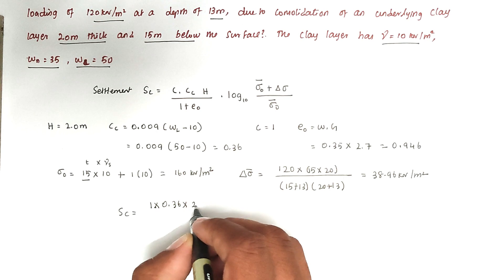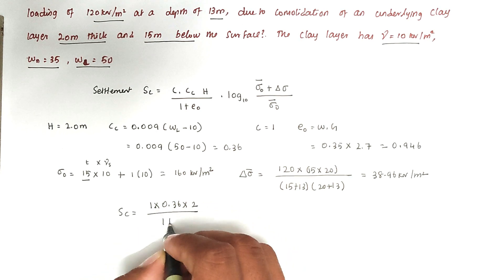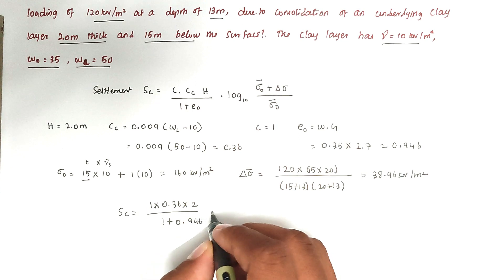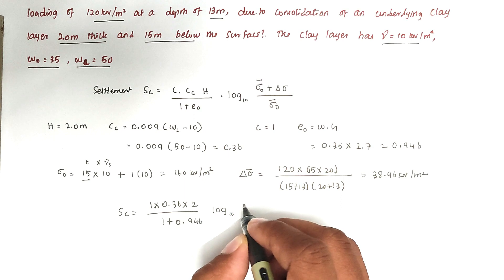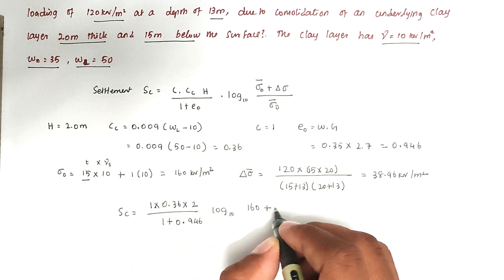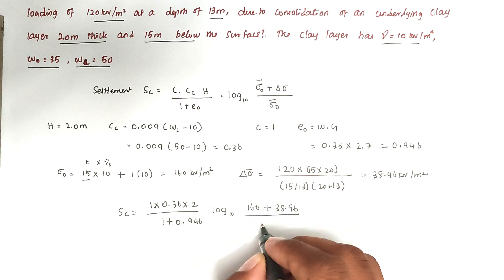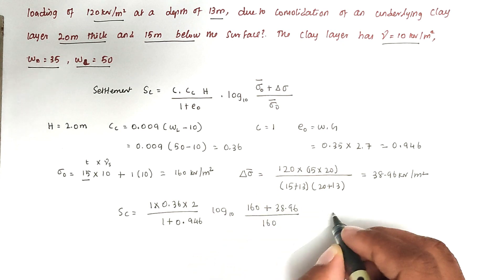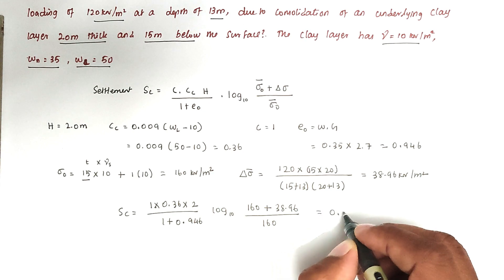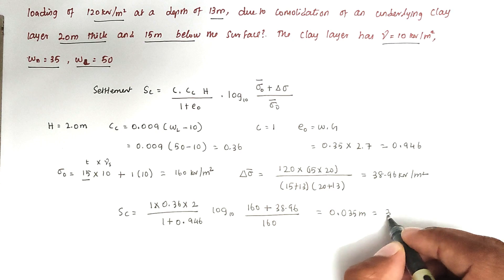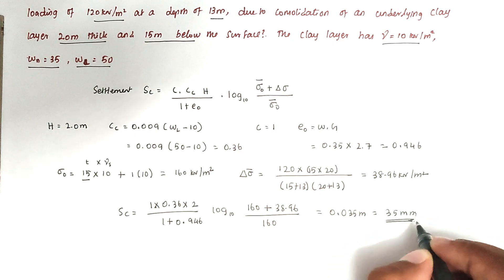Times log 10, where sigma naught value is 160 plus 38.96 divided by 160. Solving this, we got the value of 0.035 meters, so that is 35 millimeters. This is the method we can solve the problem. We will see the next video.